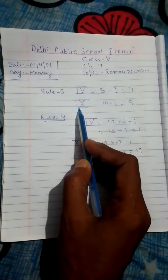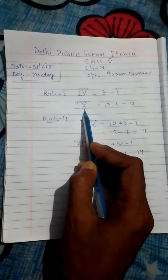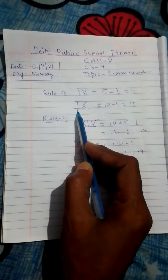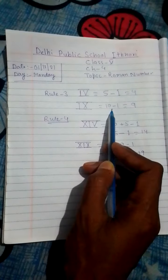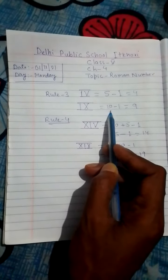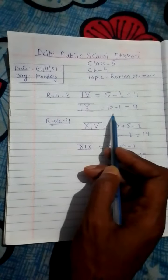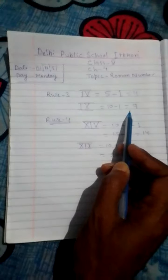One more example IX. See this I is left side of this X. I is smaller than this X. So in this case also subtraction will be there. So for this X, 10 minus for this I, 1. This will give 9.